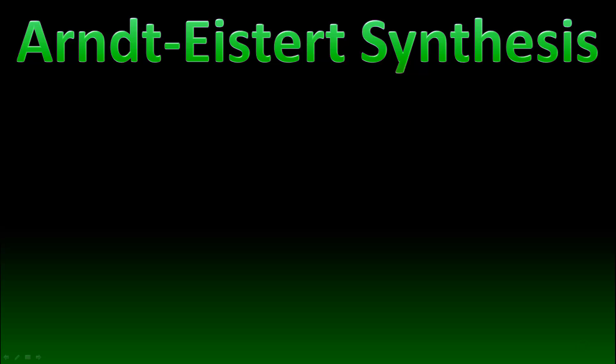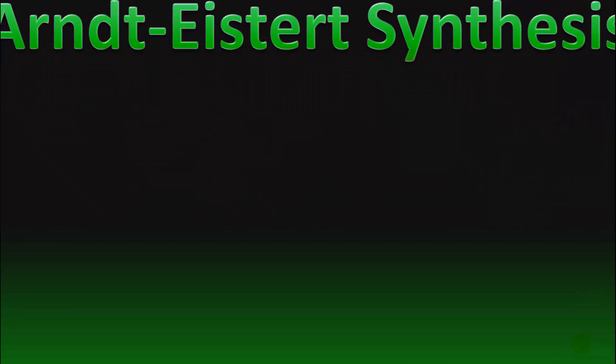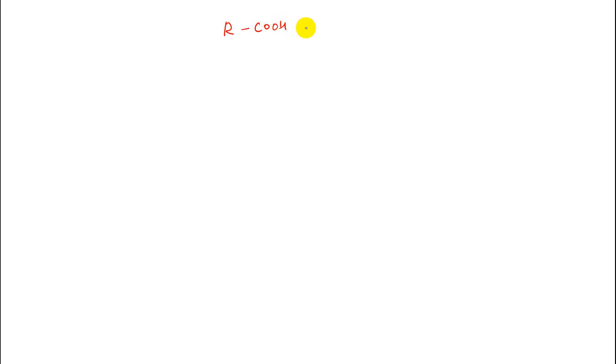Hello and welcome to this video on Arndt-Eistert synthesis. Arndt-Eistert synthesis is a series of chemical reactions that converts a carboxylic acid into the next higher homolog of the carboxylic acid. So if I start with a carboxylic acid RCOOH, then this carboxylic acid can be converted to the next higher homolog, that is RCH₂COOH. This is not a single reaction — it is a series of reactions.